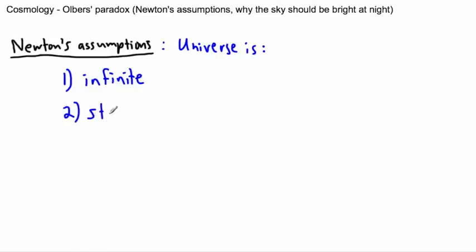Number two, they thought at the time that the universe was static. In other words, the universe should be unchanging in time. And three, they thought that the universe should be uniform. What I mean by that is it should be the same in most places. In other words, the distance between the stars should be the same, and all stars should have the same luminosity. So those were Newton's main three assumptions.